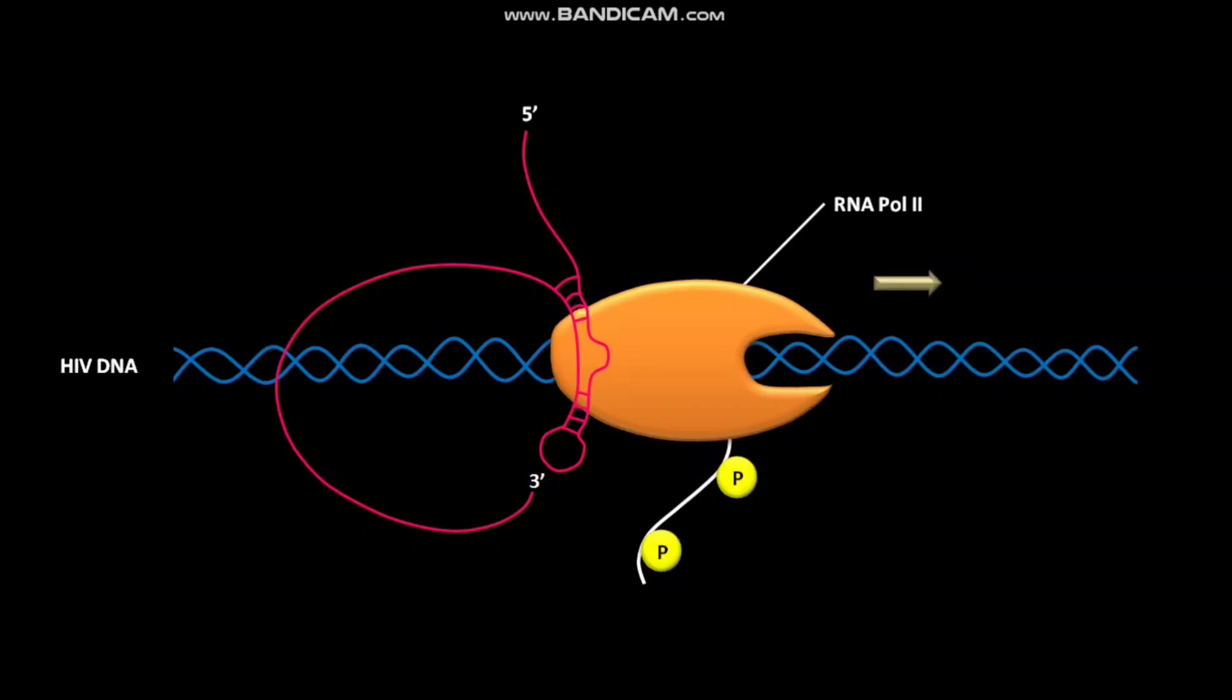The HIV transcript consists of a TAR element or TAR RNA. The TAR RNA is located near the 5' end of the HIV transcript. The TAR sequence folds into an RNA hairpin with a bulge in the middle of the stem.